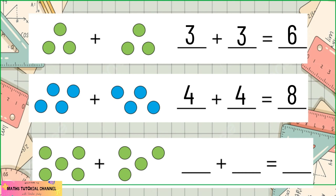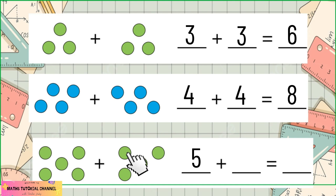Let's count the third one: one, two, three, four, five. Let's write it here. And the second group: one, two, three, four. Great job! Let's write it here. Five plus four is equal to — what is your answer?